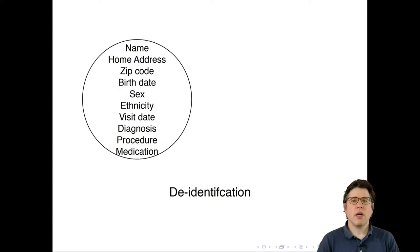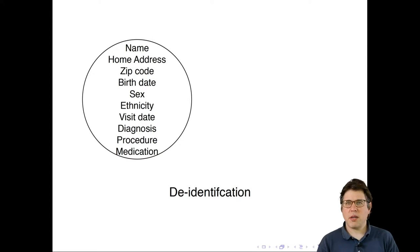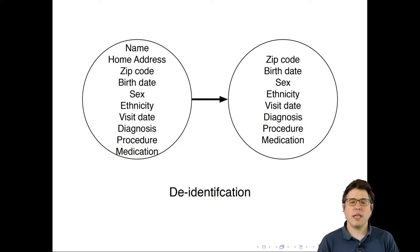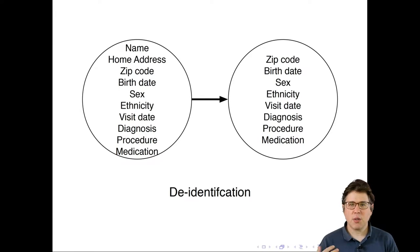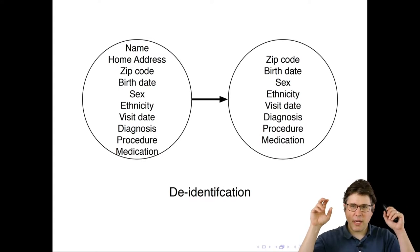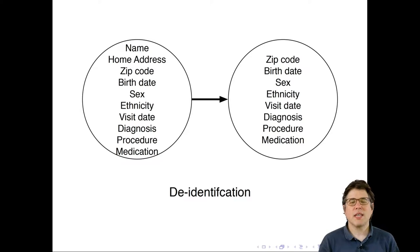They wanted to release this data for researcher analysis to improve health care. So they went through a process called de-identification, stripping out people's name and home address but leaving the other information in. They had the idea that after this process of de-identification, the data was now anonymized — and I put anonymized in quotes because it creates the appearance of anonymity without actual anonymity.